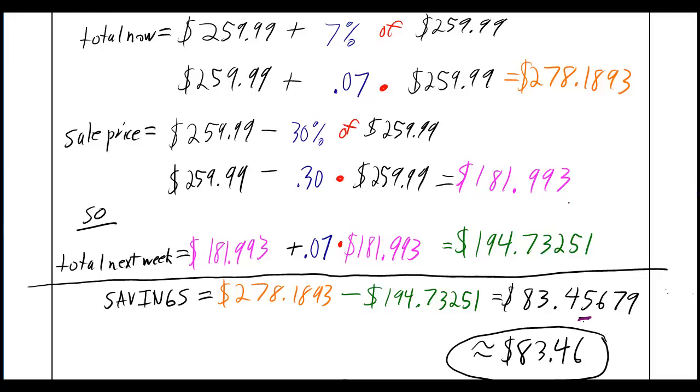Remember though, it said to the nearest cent. So this is going to be $83.46 because you look at the cent's place, which is a 5, and then you look at the number to the right of it. If that number is 5 or above, then you round up, so you go from 45 to 46. Now if it was below 5, you would just keep that number the same.